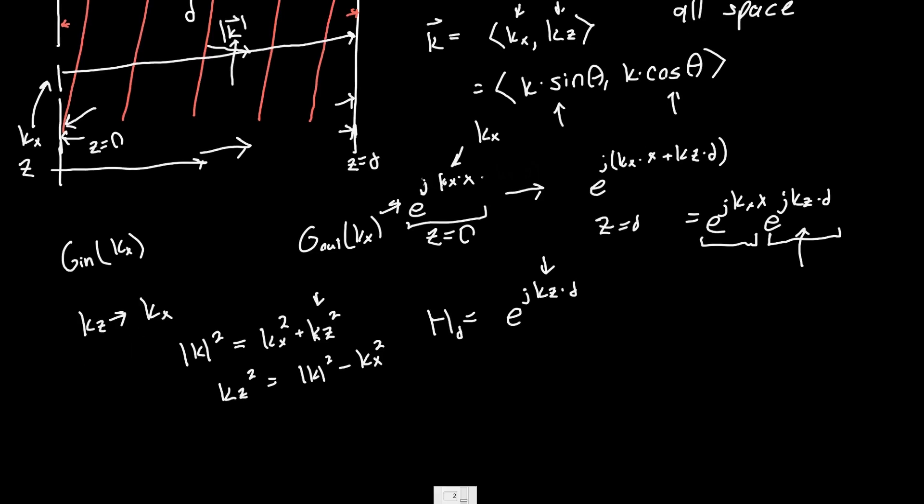Or finally, kz just by itself is just equal to the square root of, and I'm, instead of magnitude of k squared, I'm just going to write k squared. Magnitude of k is just equal to k, which is 2 pi over lambda. That's just a definitional thing. So k squared minus kx squared. And if we plug this back into our propagate by d function, we'll get that our transfer function for a plane wave of some k value, and let's factor out, let's actually factor out a k to make this even prettier. 1 minus kx squared over k squared. That should just be a k. 1 minus kx over k squared. Propagate by d is just equal to e to the j kd times the square root of 1 minus kx over k squared.